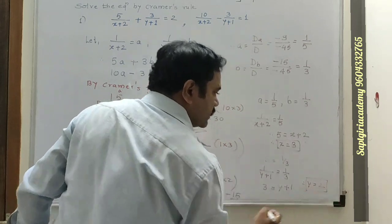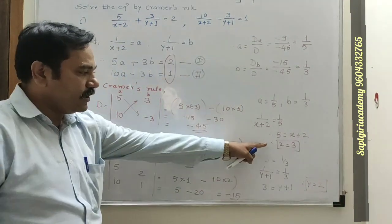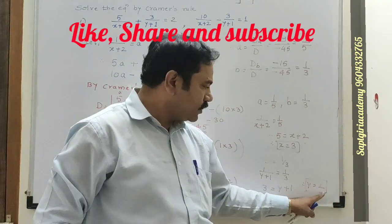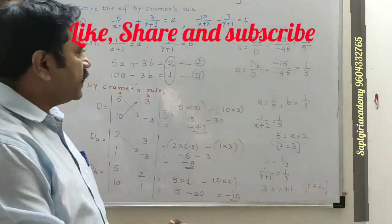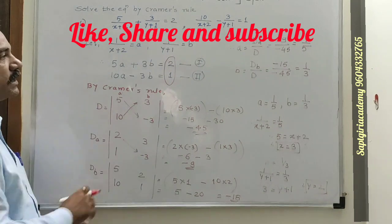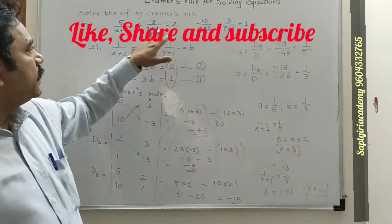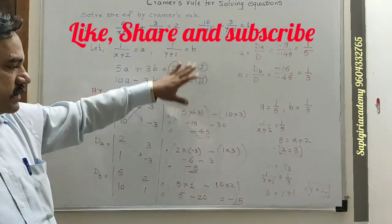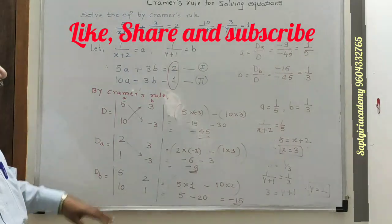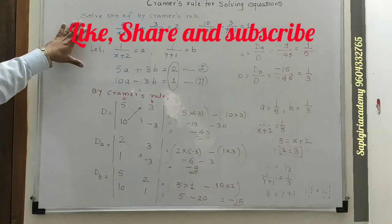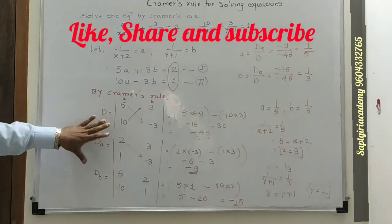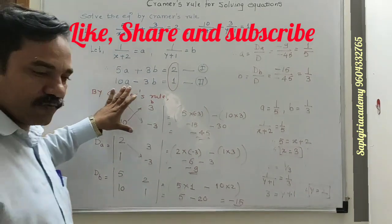So x is equal to 3 and y is equal to 2. By using Cramer's Rule, we can solve equations easily with the help of determinants. Thank you.